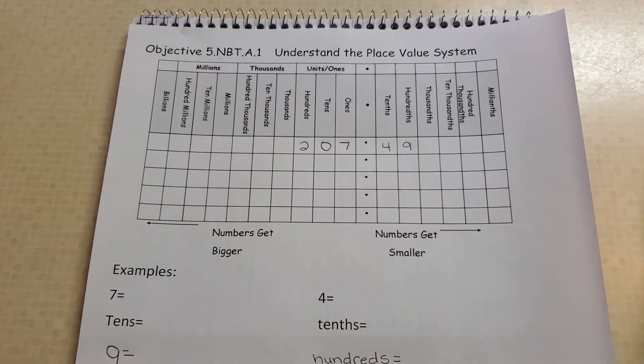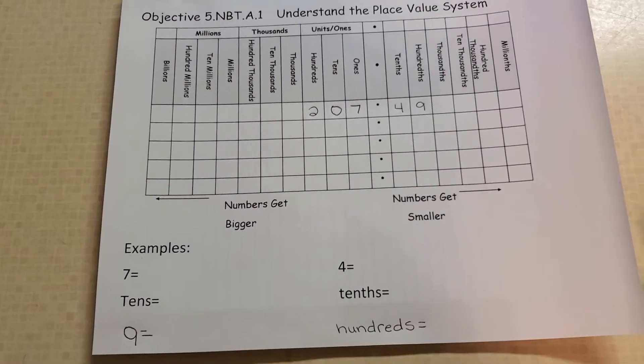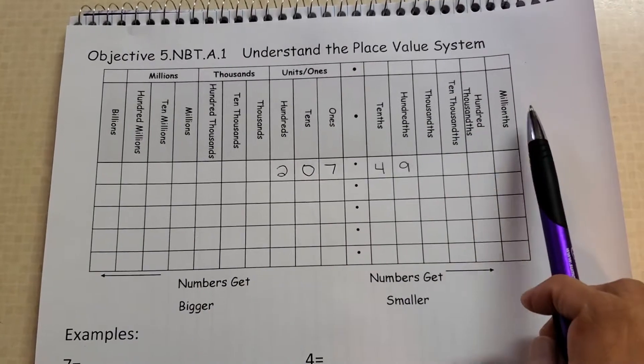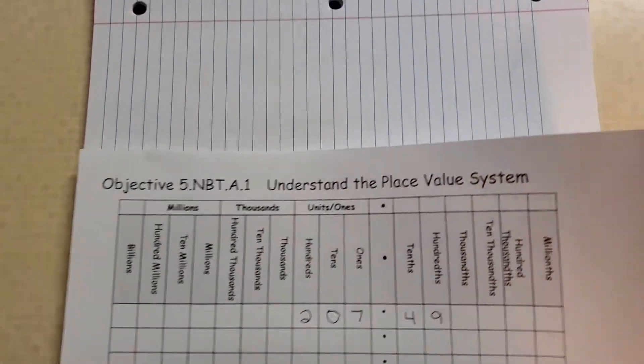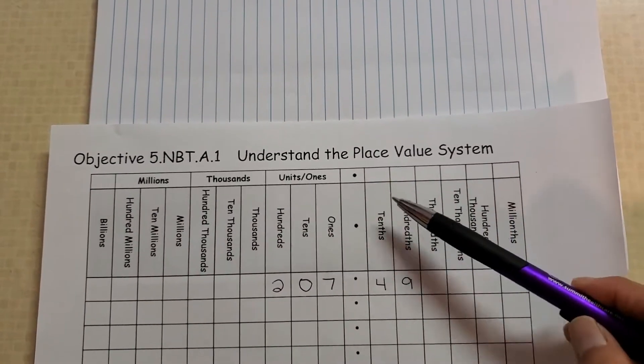Again, I had mine typed out just because my handwriting is really bad. So it's very important today that you have your place value chart. In your notebook, remember, write it sideways. You need to make sure you have your place value chart.